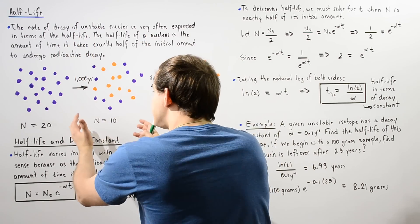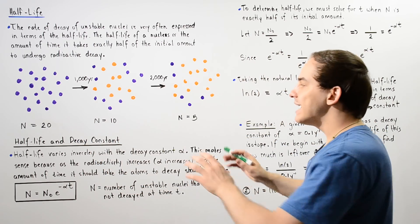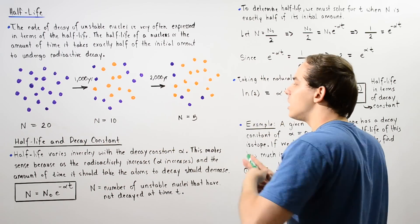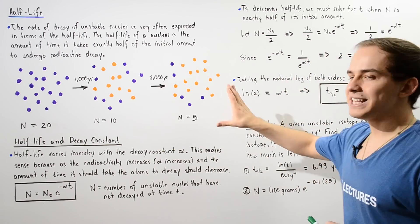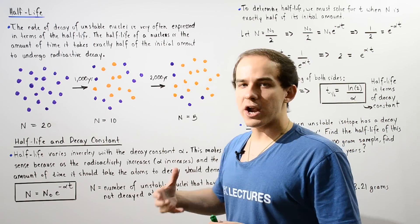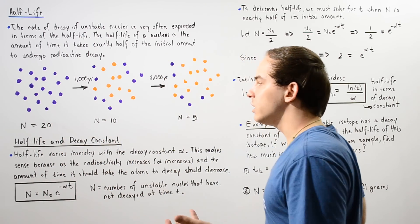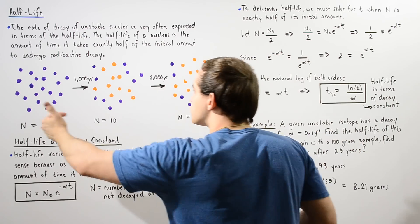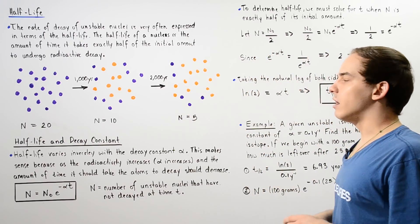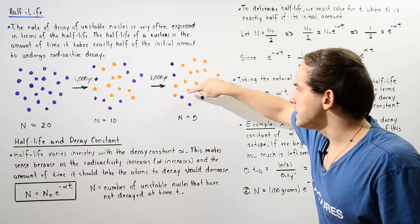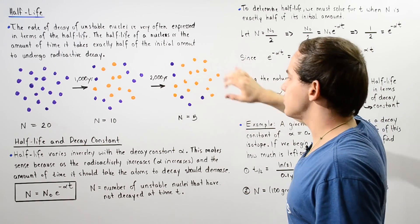Now if we begin with this sample and we wait 1,000 more years — another half-life — exactly half of this sample will undergo radioactive decay. Exactly half of 10, or 5, will be left over that have not yet undergone radioactive decay. So if we begin with our initial sample of 20 unstable nuclei and we wait 2,000 years, we'll have 5 left over shown in purple, and 15 will have transformed into the more stable daughter nuclei shown in orange.